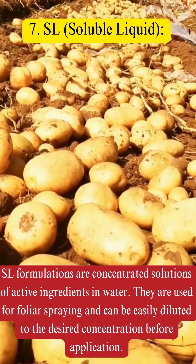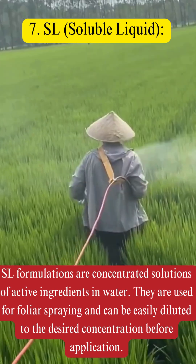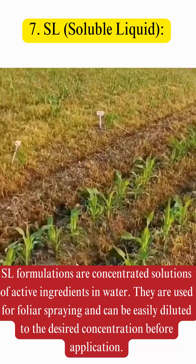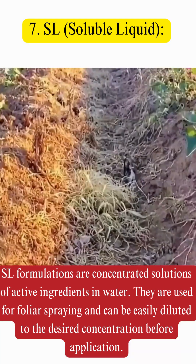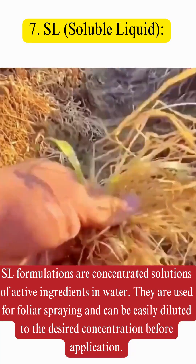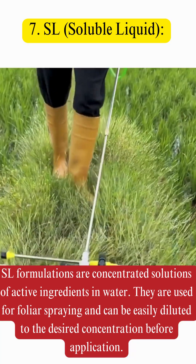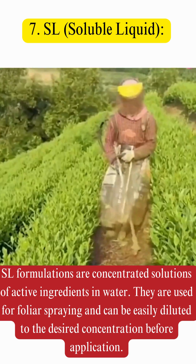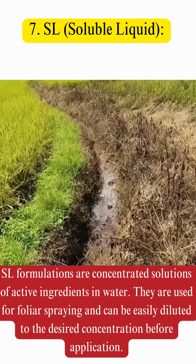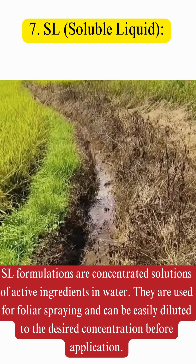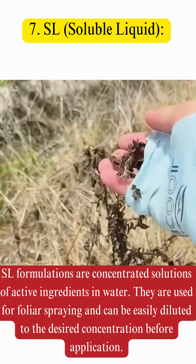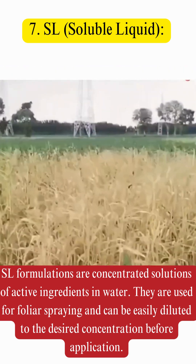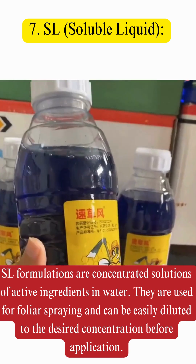7. SL — Soluble Liquid. SL formulations are concentrated solutions of active ingredients in water. They are used for foliar spraying and can be easily diluted to the desired concentration before application.